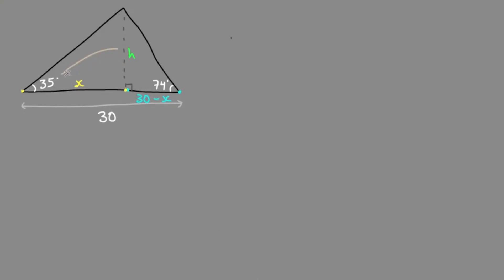Now we can use tan because we have the opposite and the adjacent of each one. Call this triangle 1 and triangle 2. For triangle 1, tan of the angle 35 equals the opposite, h, over the adjacent, x. And we could simplify this later.